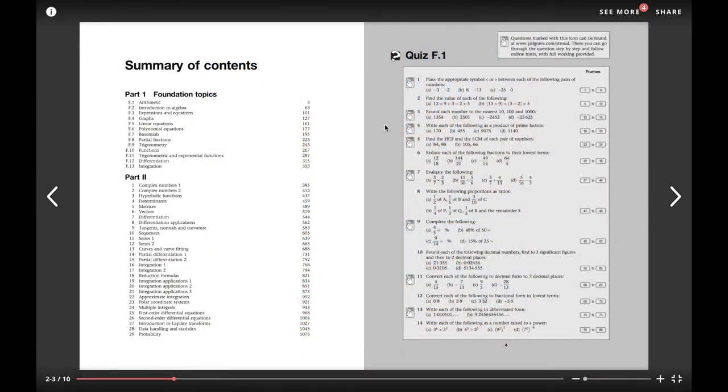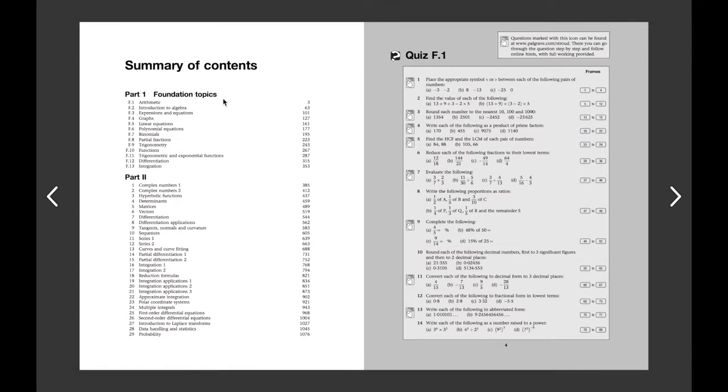Engineering Mathematics is in two parts. The first part, the foundation topics, checks and practices your student's understanding of GCSE and early A-level maths. Quizzes start each chapter so that they can check their level. If they do the quiz well, they can skip that chapter.